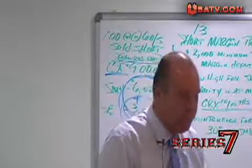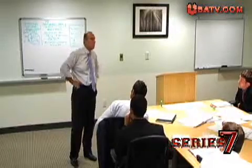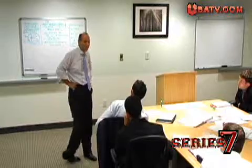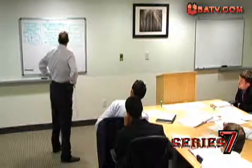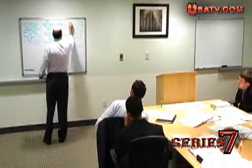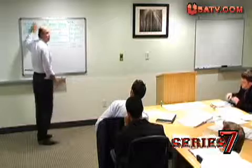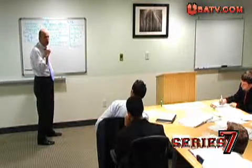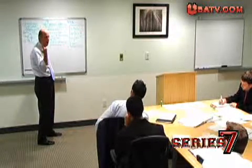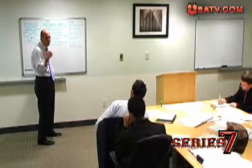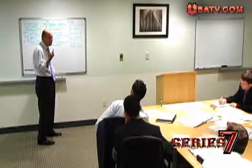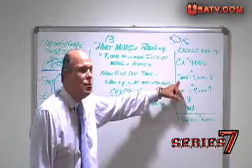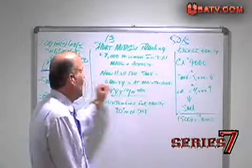Why did you short the stock? Because you thought it was going down. This stock goes down 10 points — from $60 a share to $50 a share. With 100 shares sold short in the position, the short market value has declined to $5,000 from $6,000.